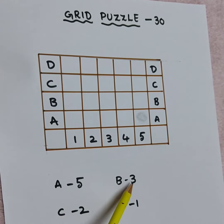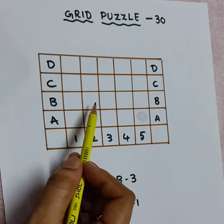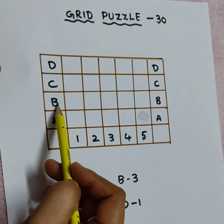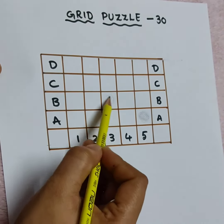Next, B, 3. Letter B here. 1, 2, 3. So B also here, also here, also any B. B, 3. So here we have to do coloring.